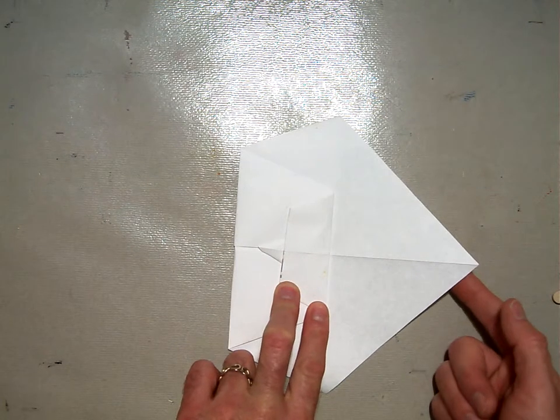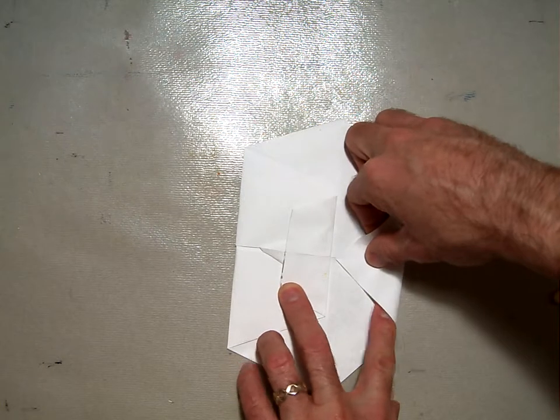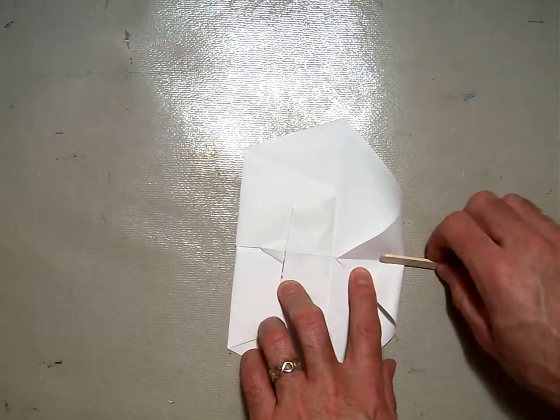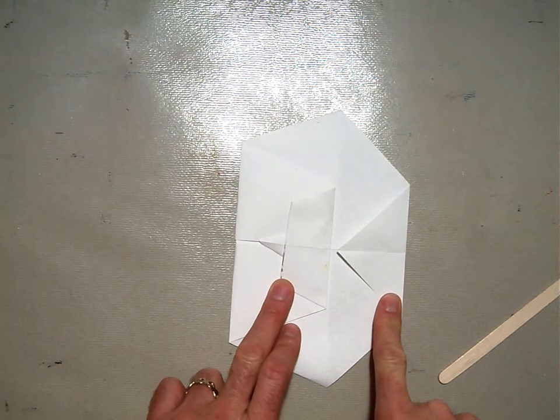Then this tail edge, I'm going to valley fold this direction so it just about meets up with the back of the head and crease that. So that's what we should have looking after step five.